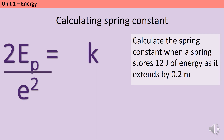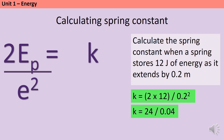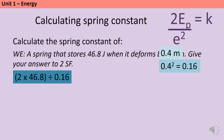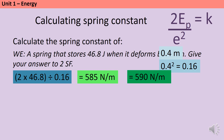To calculate the spring constant when a spring stores 12 joules of energy as it extends by 0.2 metres: k = 2 × 12 / 0.2² = 24 / 0.04 = 600 newtons per metre. For a second example with 46.8 joules and a deformation of 40 centimetres — first convert: 40 cm = 0.4 m, and 0.4 squared = 0.16. Then k = 2 × 46.8 / 0.16 = 585 newtons per metre, which rounds to 590 newtons per metre to two significant figures.